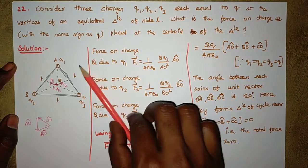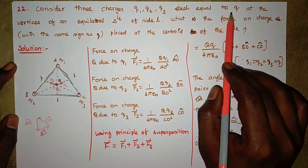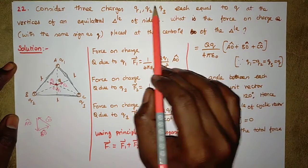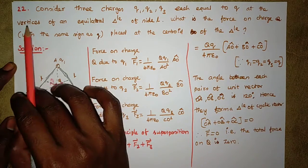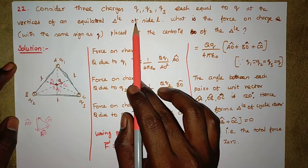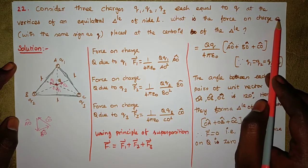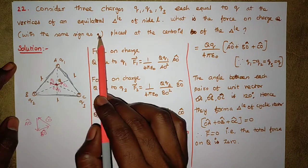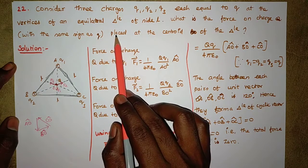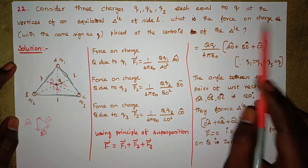Consider three charges Q1, Q2, Q3, each equal to Q at the vertices of an equilateral triangle of side L. What is the force on charge Q with the same magnitude as Q placed at the centroid of the triangle?